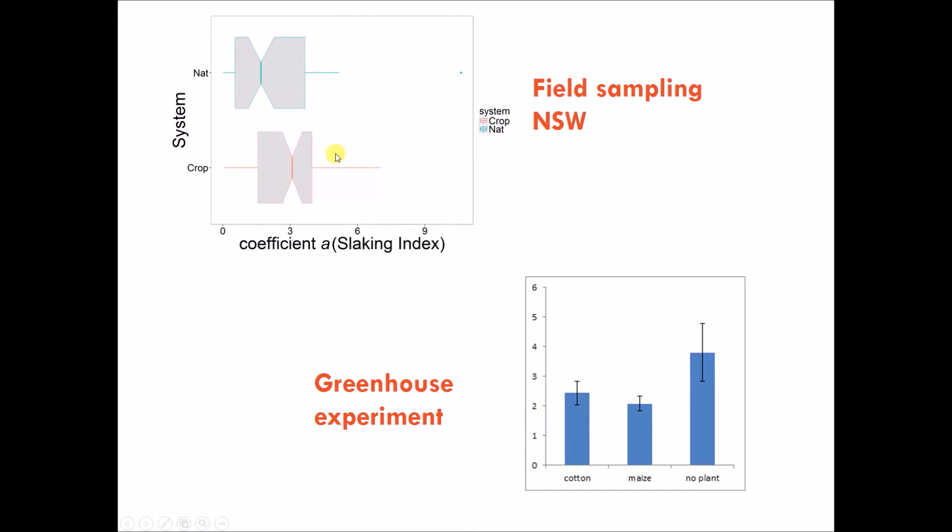As expected, we also found that this coefficient was higher in those soils that are under crop compared with those in natural conditions. This index was also useful in demonstrating the structural role that plant roots have on stabilizing soil.